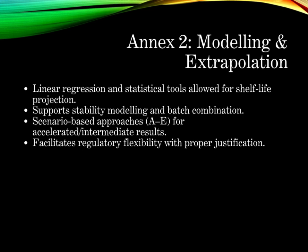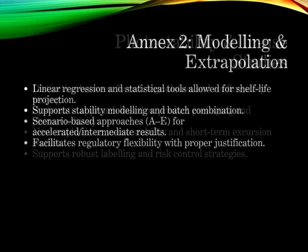Annex 2 introduces scientifically justified stability modeling. It covers linear regression for shelf-life prediction, batch combining methods, and scale transformations. The guideline introduces scenarios through E to help regulators and industry address statistical variance under different stability conditions. It allows thoughtful extrapolation, provided data supports it.